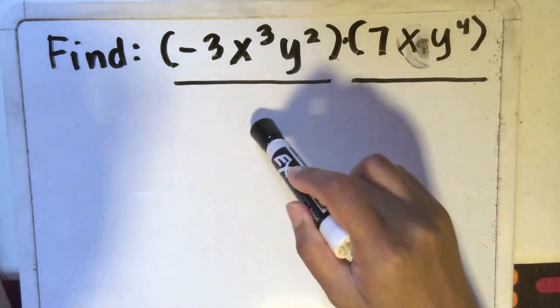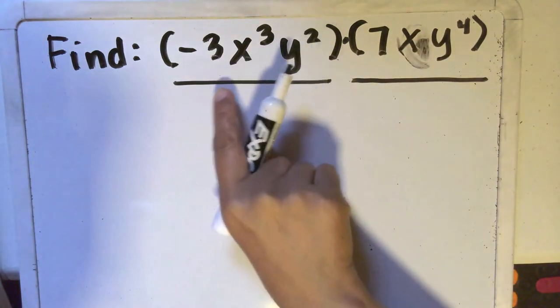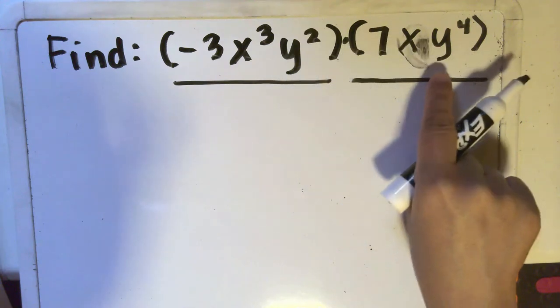That means a single term multiplied by another single term. So let's say we have negative 3x to the third power y squared multiplied by 7xy to the fourth.